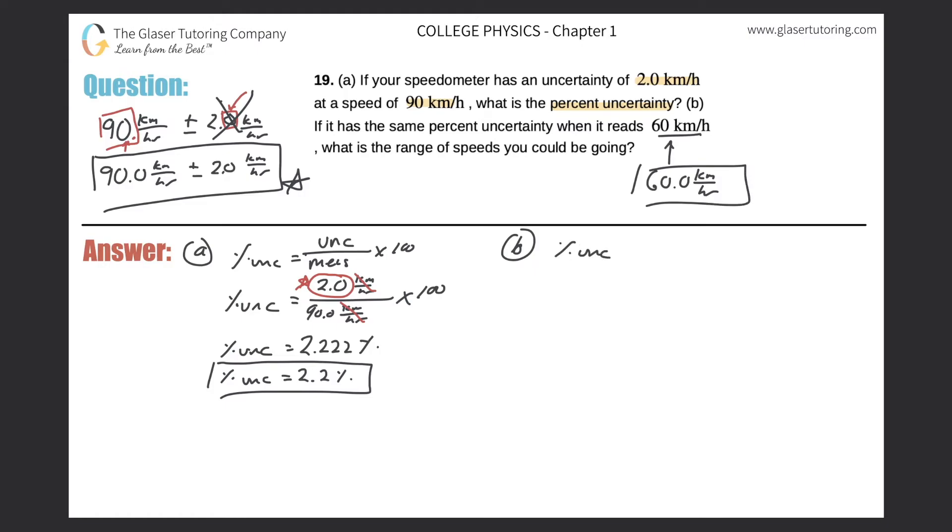Again I need to use the same percent uncertainty formula because what we're really looking for in order to find the range, we have to find the actual uncertainty. Meaning I'm looking for this variable in the numerator—I'm looking for the actual uncertainty of the measurement divided by the measurement itself, multiplied by 100. It says to use this same percent uncertainty, so this will be 2.2. I want to find the actual uncertainty, and the measurement we took was 60.0, and multiply that by 100.